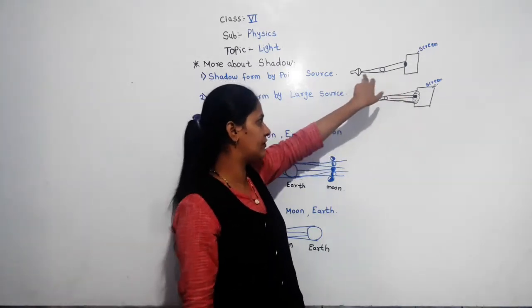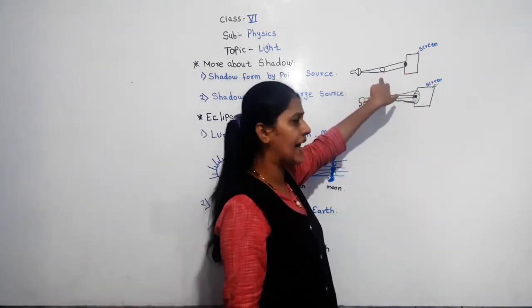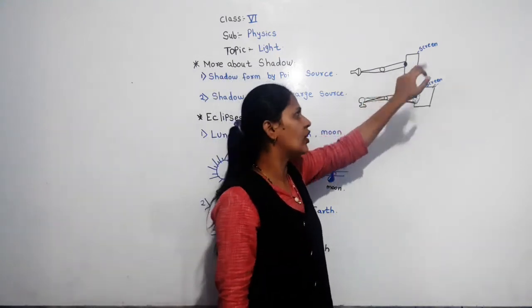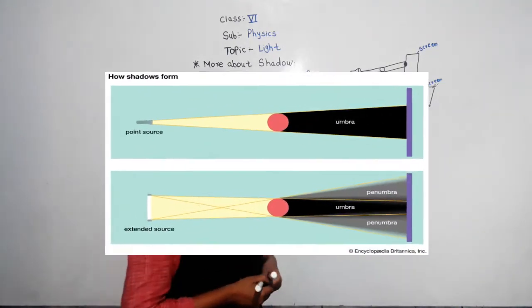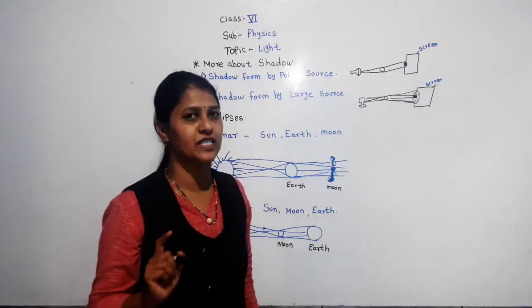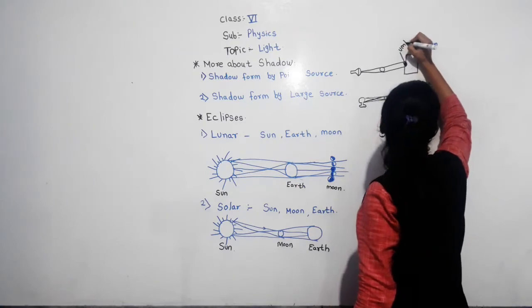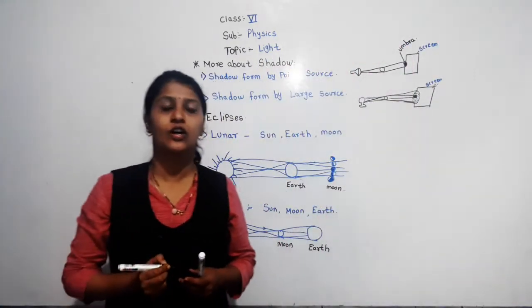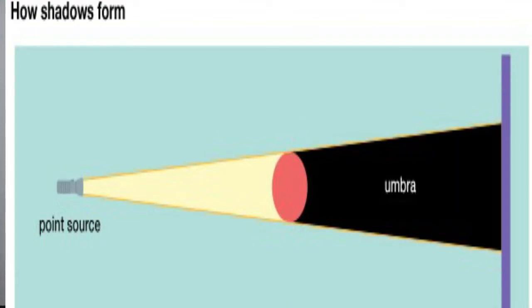When a shadow forms from a point source — suppose this is a torch and there is an opaque object — on the screen you will get a dark patch. This dark patch is called the umbra. So through a point source of light, you get only a dark shadow, and that part is called the umbra.